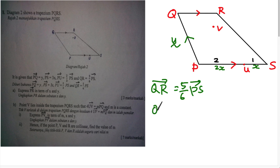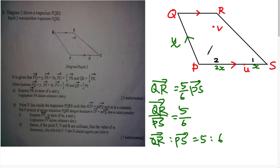Next, QR equals 5/6 of PS. Moving PS to the other side gives QR over PS equals 5/6, so the ratio of QR to PS is 5:6. We just found PS equals 3x, which corresponds to the 6 in the ratio, so we need to figure out QR.